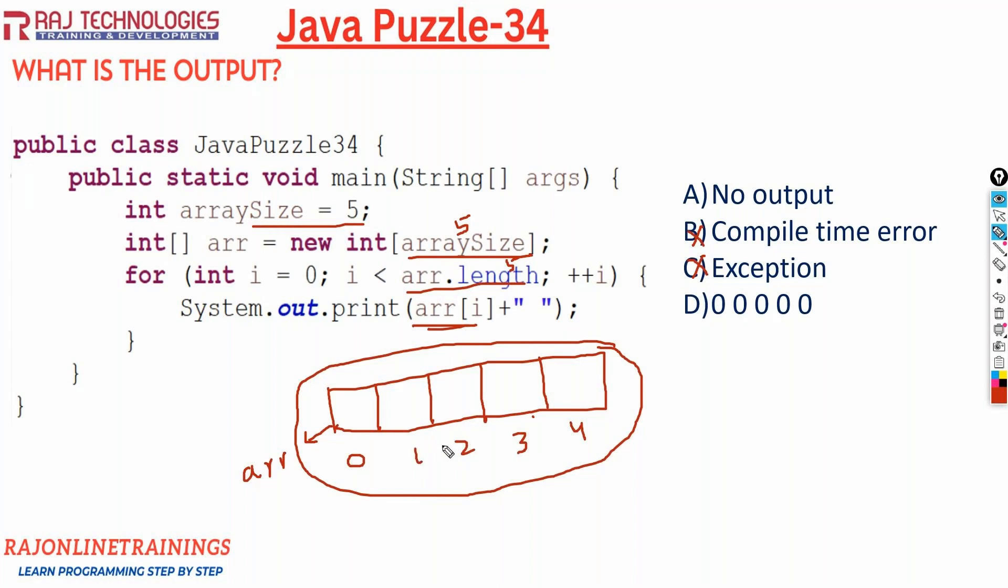So this is very important. When you are not storing any value into array, once you allocate memory for array, the values what it holds is default values. What value it holds? Default values. Since array is of type integer, what is the default value for integer? Zero. So if you are not going to store any value into array, it's going to have default values: zero.